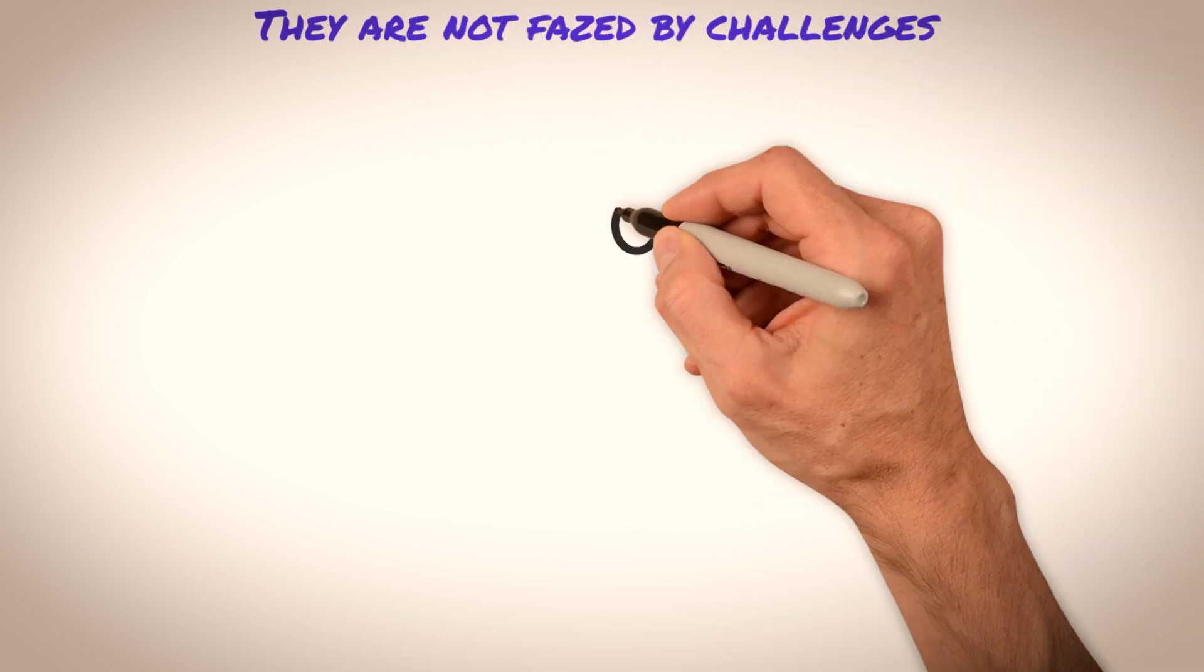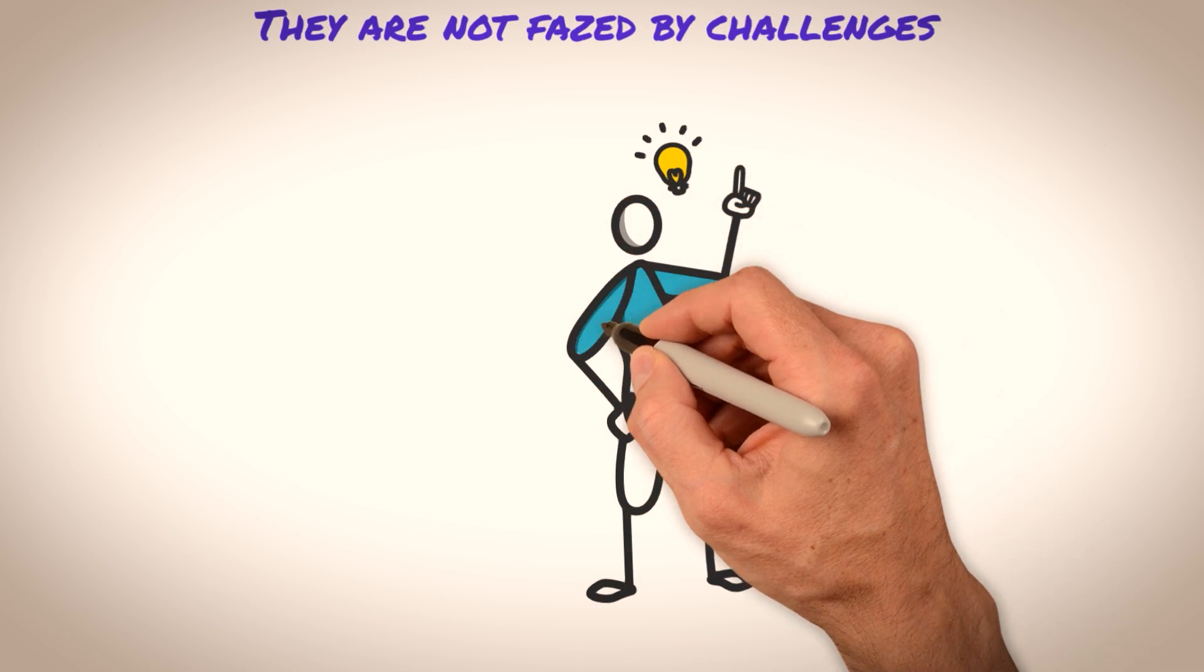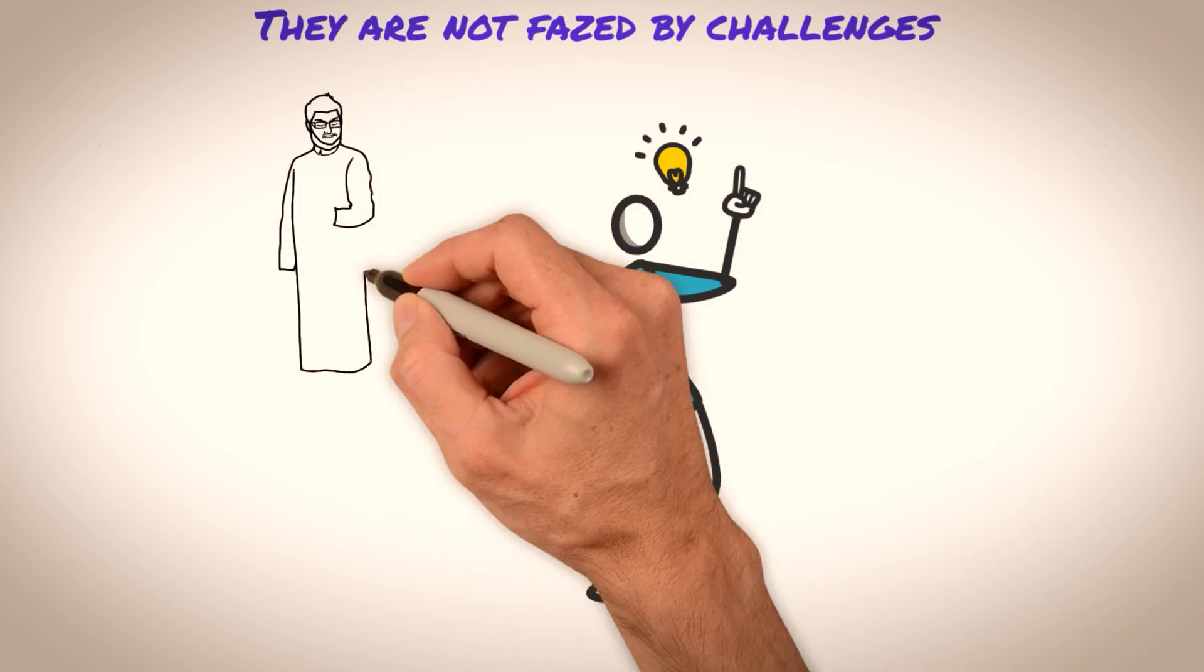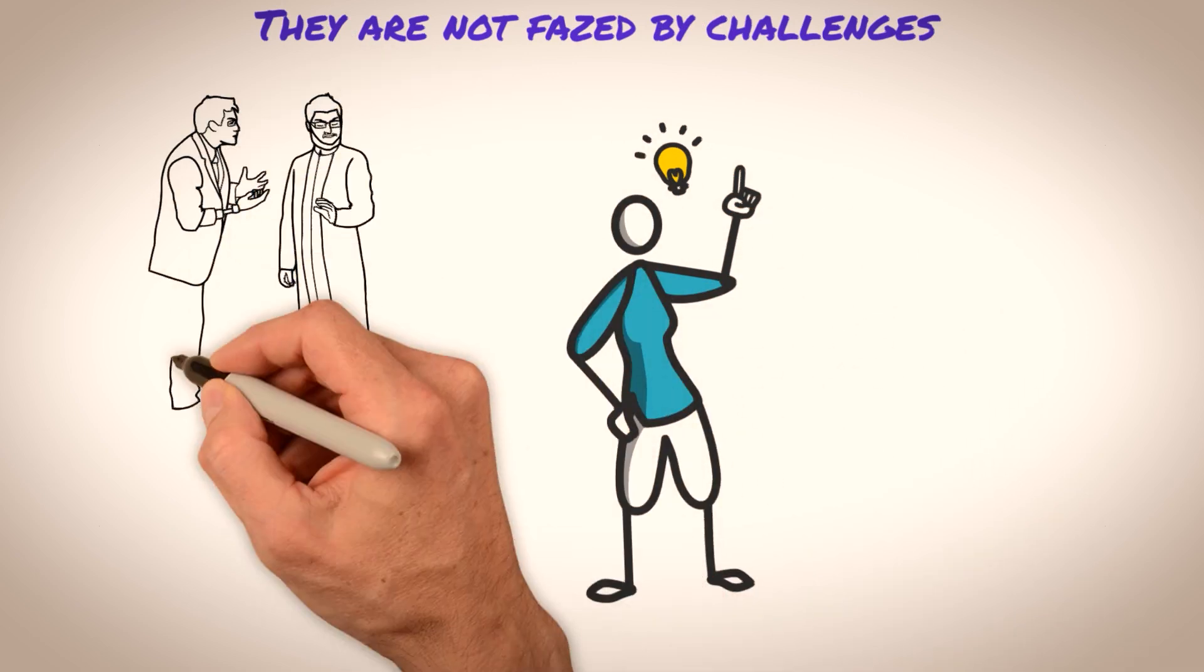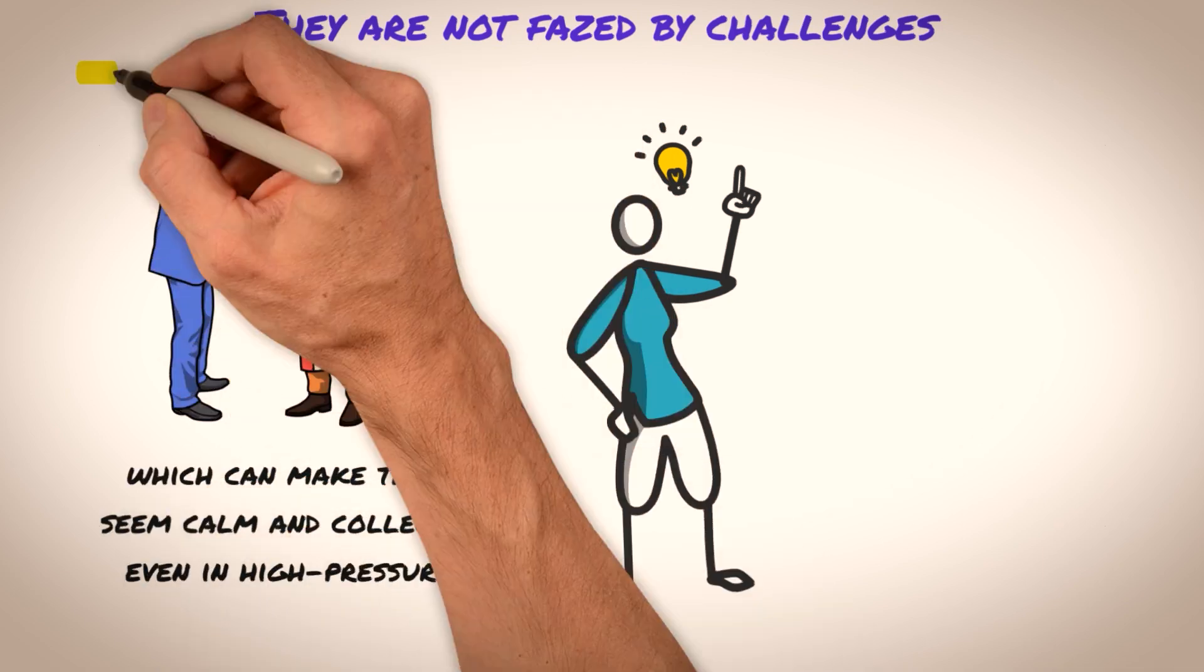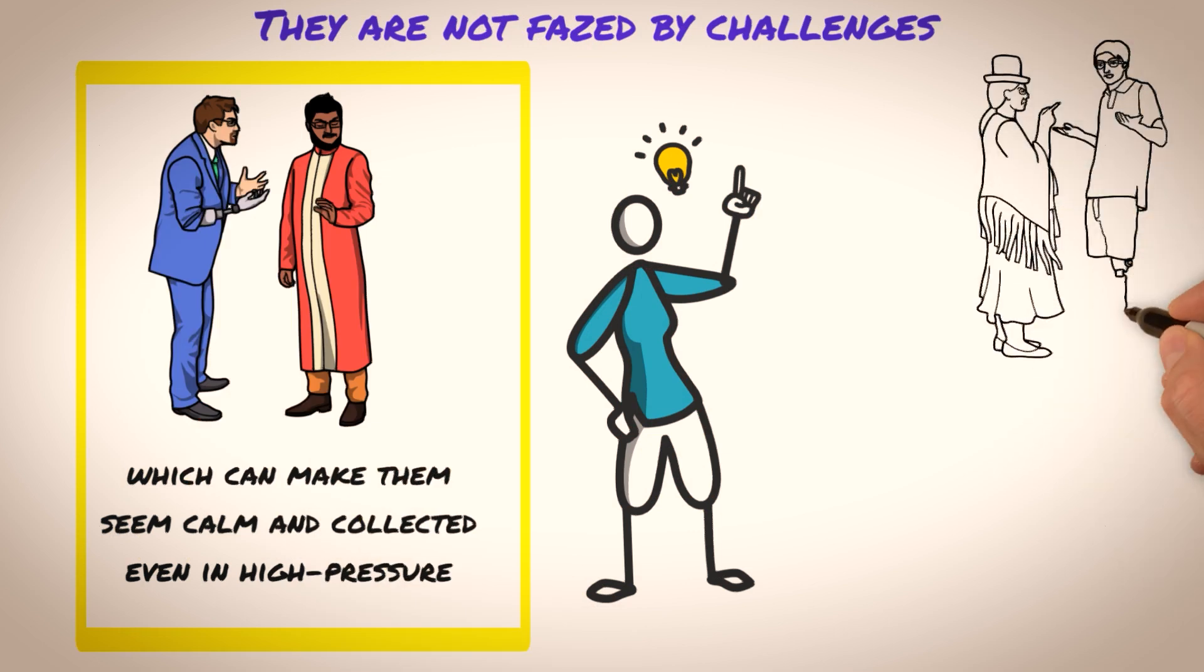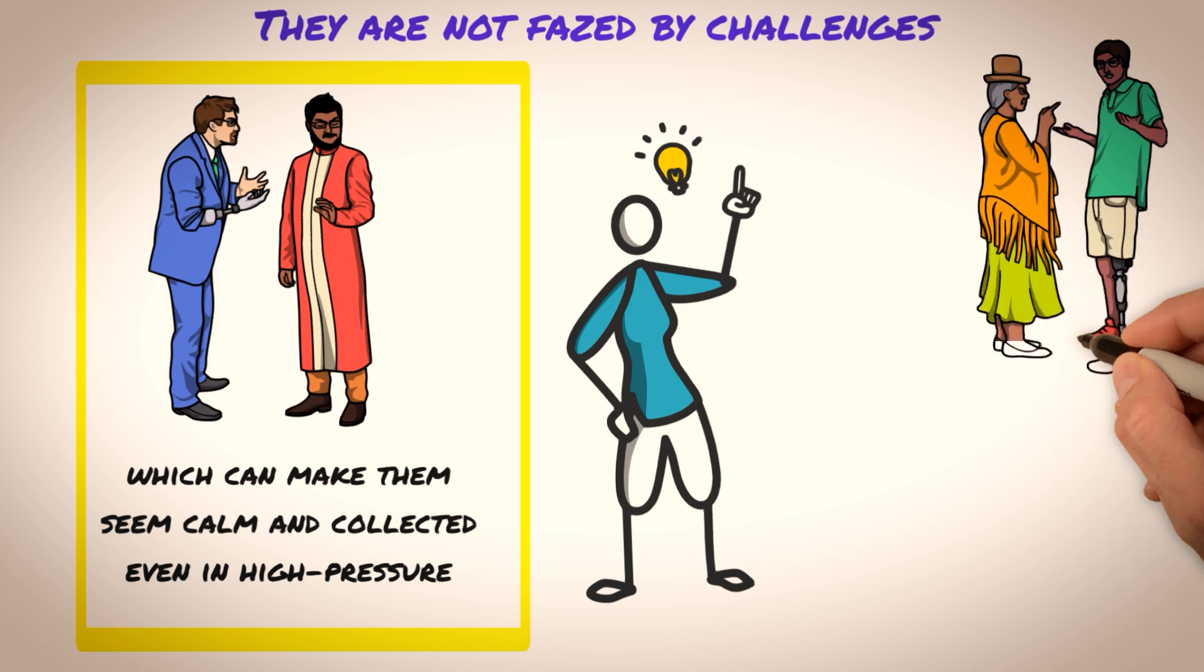They are not phased by challenges. Sigma males are often known for their problem-solving skills and their ability to think outside the box. They may approach challenges with a level-headed and analytical mindset, which can make them seem calm and collected even in high-pressure situations. This calm demeanor can sometimes be mistaken for arrogance or disinterest in the situation at hand.